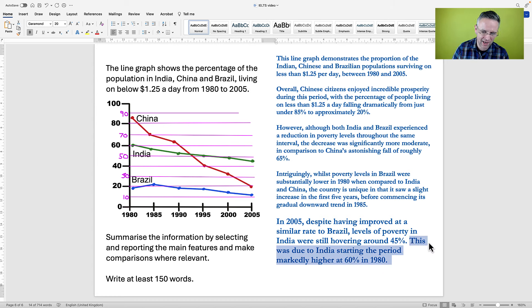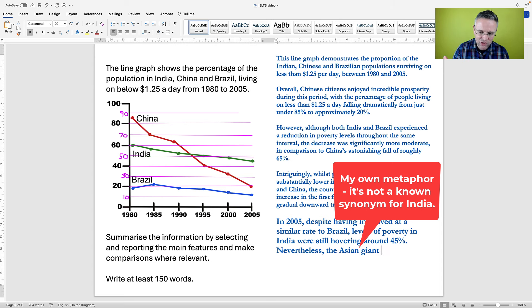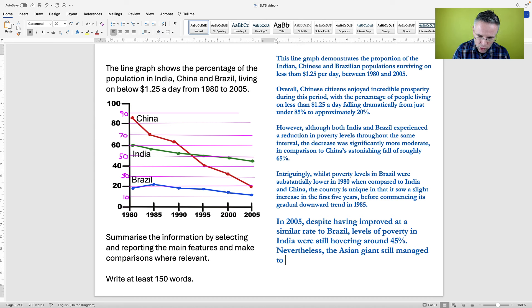Now I did think of another ending, but this involved a little bit more maths. I was going to say nevertheless, and then instead of India, I'm going to say the Asian giant, that's a synonym. Nevertheless, the Asian giant still managed to close the gap with Brazil by 5%. Now we need a little bit of maths here. At the start, there was 40% difference between them, but at the end, there is 35%. So that's a difference of 5%. Why did I not put that? Simply because some people who are not comfortable with maths will not like that. This is not a maths test. However, if you can do a simple calculation like that, then of course do it.